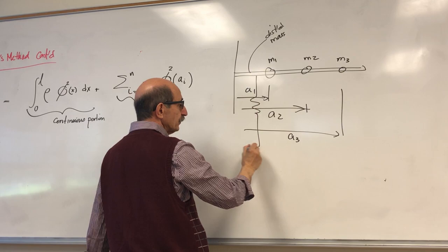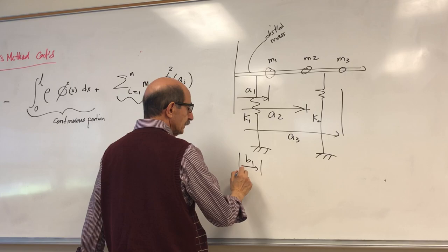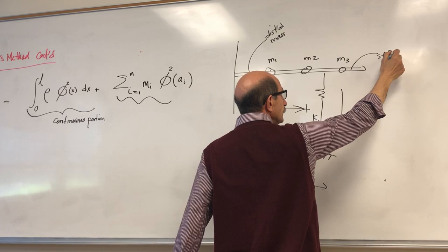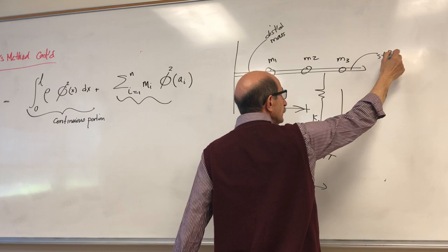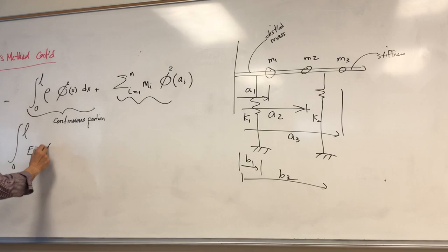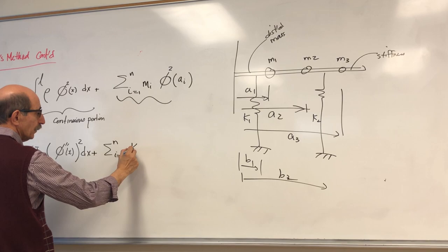For the springs, or the total stiffness of the system, if you have several lumped stiffnesses k1, k2, k3 at different positions — and the beam itself also has stiffness — the total stiffness is given by EI times the second derivative of phi squared, integrated, plus the sum from i=1 to n of k_i times phi squared evaluated at each location.